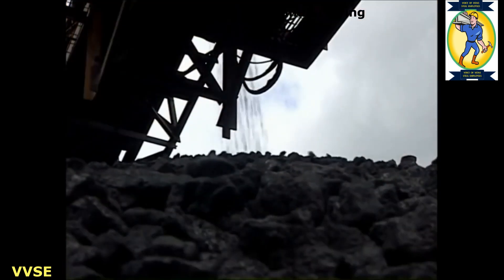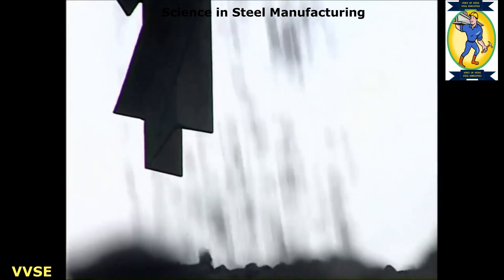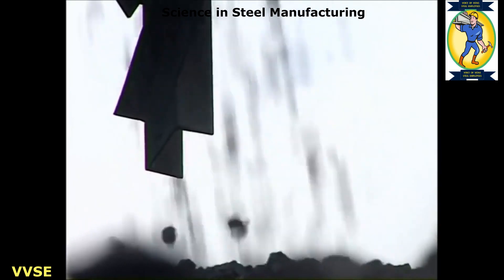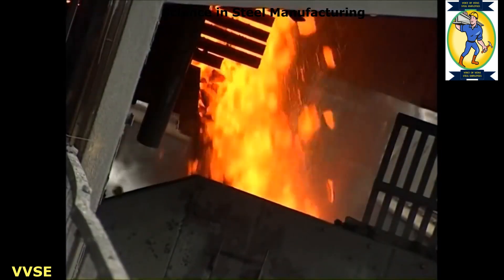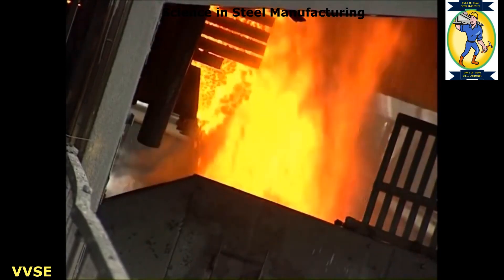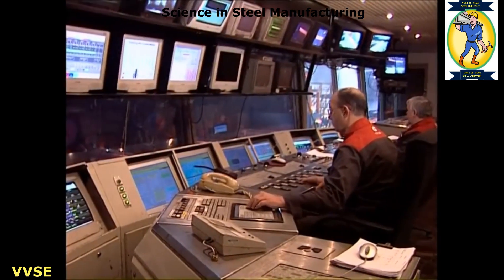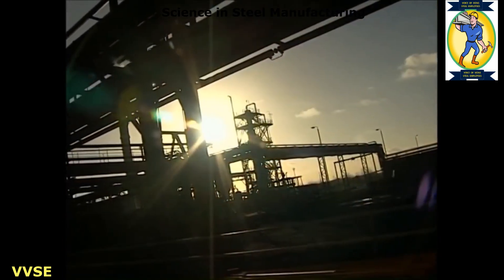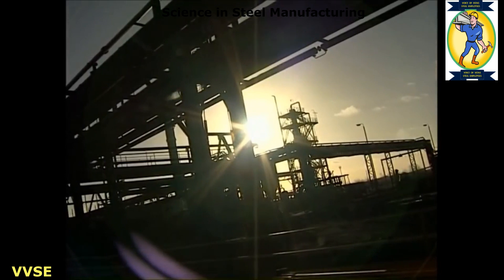Carbon is required for the blast furnace and this is supplied in the form of coke. To make coke, coking coal is heated in an oven. This drives off volatile by-products and leaves carbon. Gas produced in this process is used as a fuel, whilst other by-products such as tar and sulphur are extracted and refined.